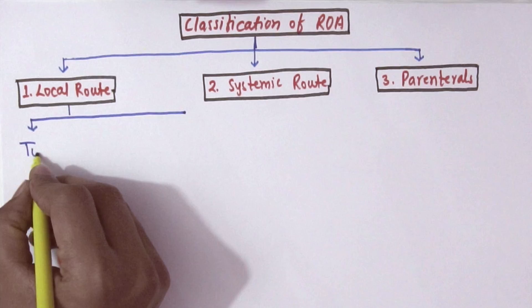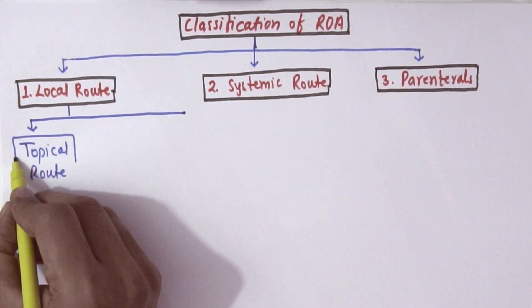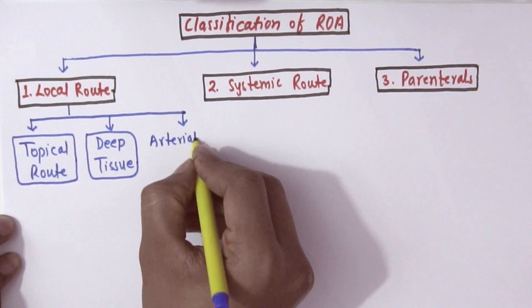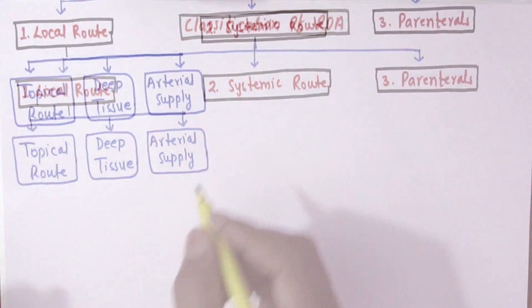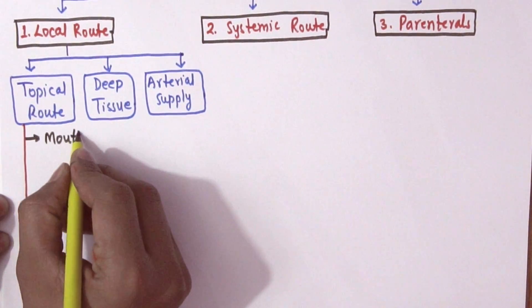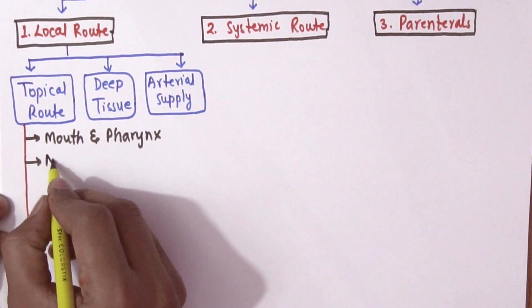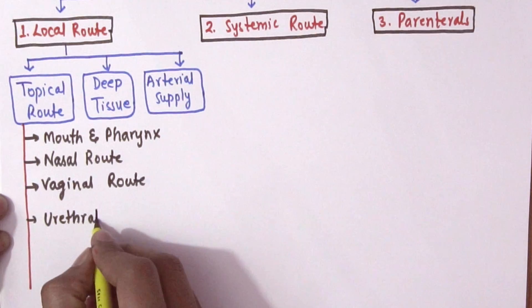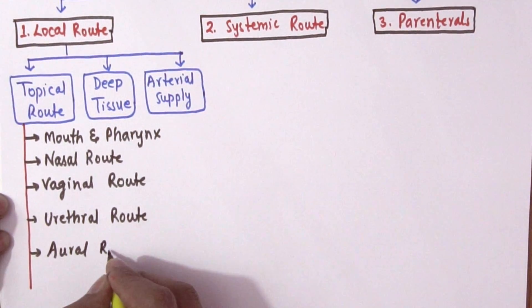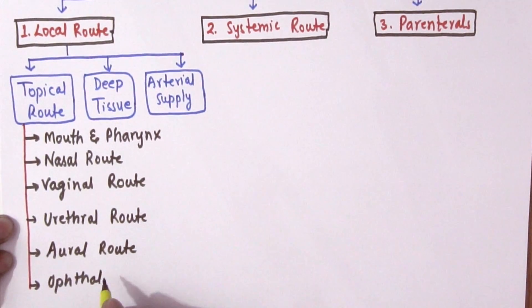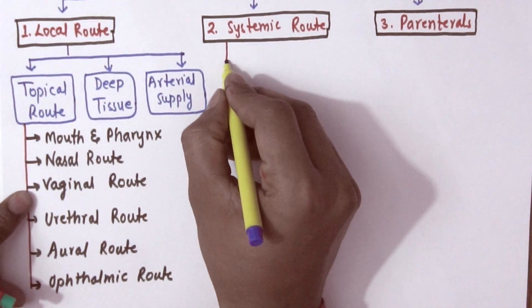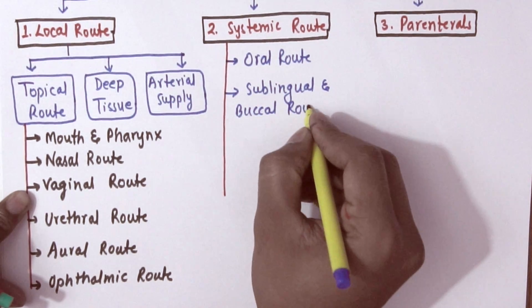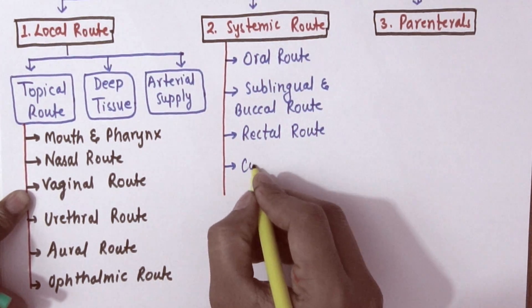Local route is further classified into topical route, deep tissue, and arterial supply. This topical route is further classified into various subtypes: mouth and pharynx, nasal route which is given to nose, vaginal route, urethral route, aural route which is given to ear, and ophthalmic route which is given to eye. Systemic routes include oral route, sublingual and buccal route, rectal route, cutaneous route, and inhalation.